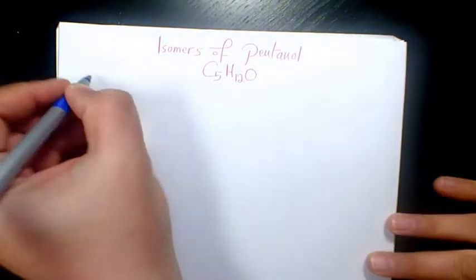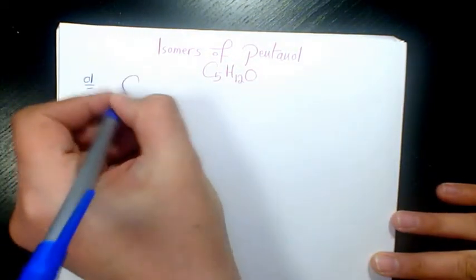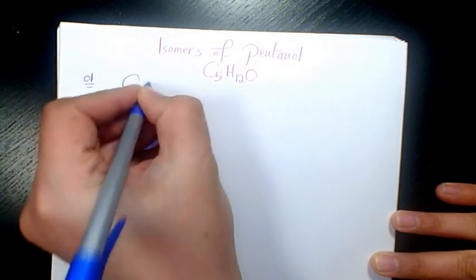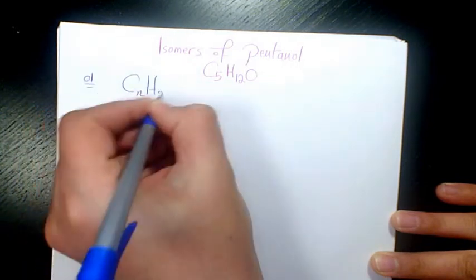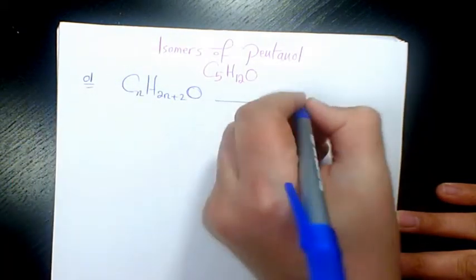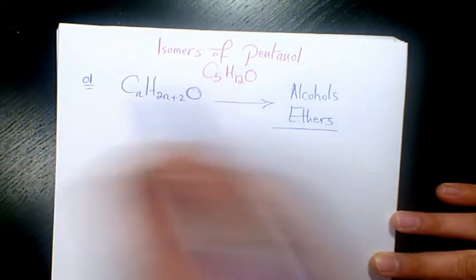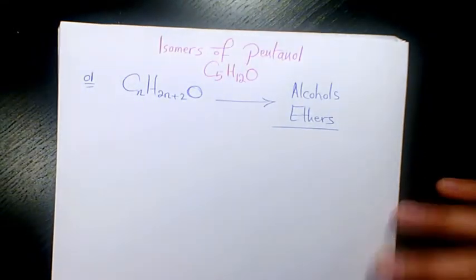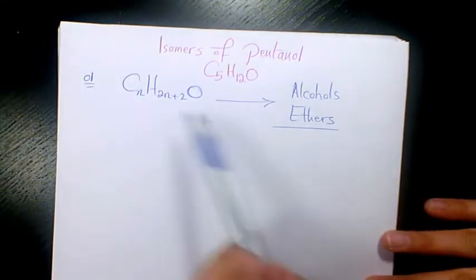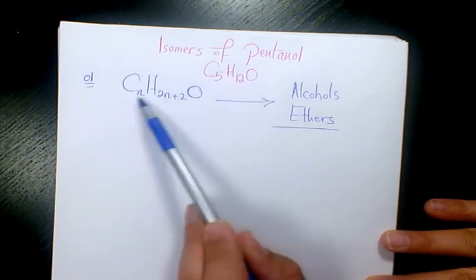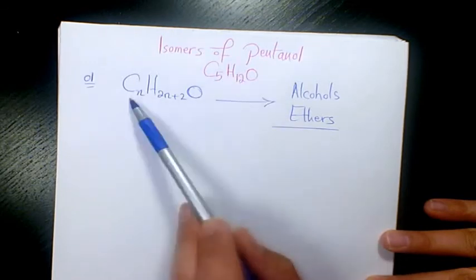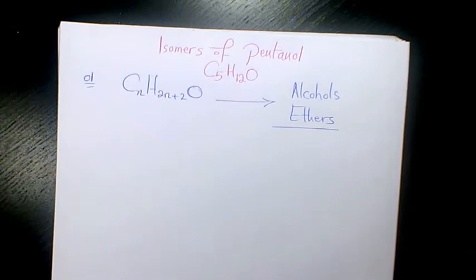It says pentanol, it ends with O-L, and whatever we have in terms of CnH2n+2O, it means that this structure belongs to alcohols and ethers. Pentanol ends with O-L, so that's why it belongs to the family of alcohols, and the formula is C5H12O which matches this general formula, so it means that we are looking for some alcohols and we are looking for some ethers.